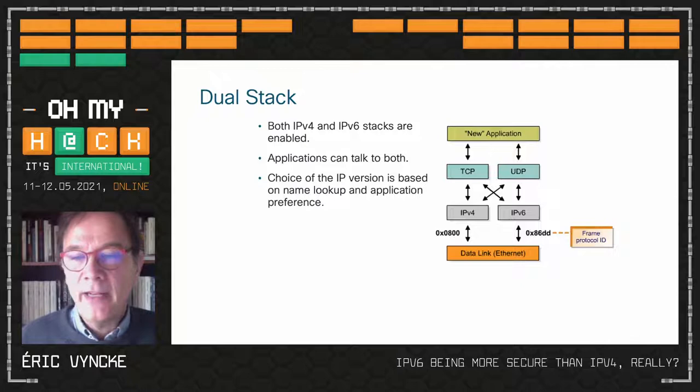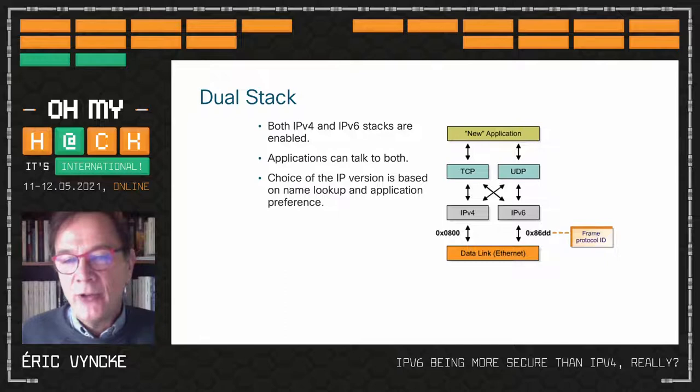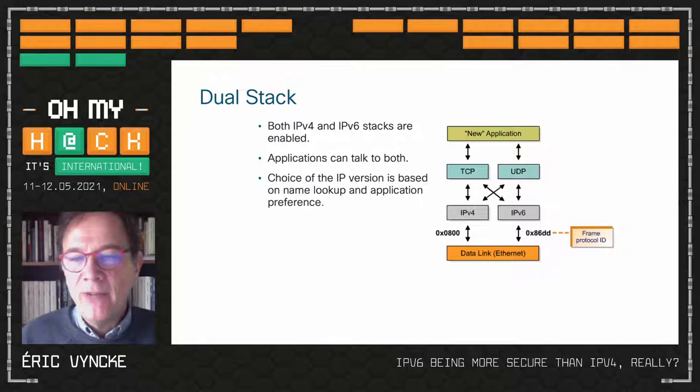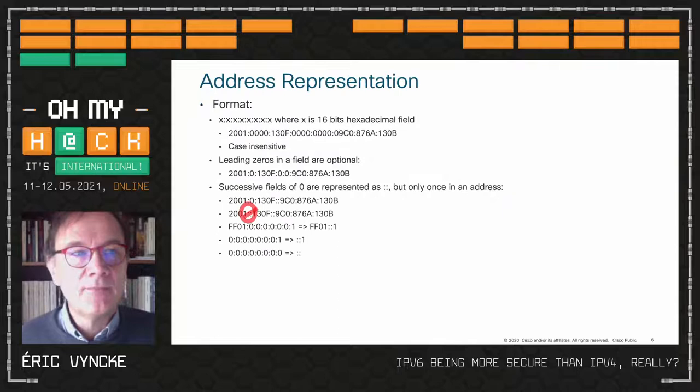Those packets are sent over the same data link — Ethernet, Wi-Fi, or whatever — because every switch or router can differentiate. In all Ethernet or Wi-Fi frames there is a protocol ID field, and two values — 0x0800 or 0x86DD — allow differentiation between IPv4 and IPv6, meaning all your laptops and phones are basically sending both kinds of packets.